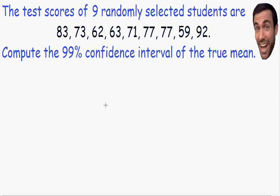Welcome to my second video on confidence intervals. In this example we're going over a problem where we need to use a t value instead of a z value. Before we get started I want to explain when we need to use a t value and when we need to use a z value. In general we need to use a t value whenever two conditions have been met.